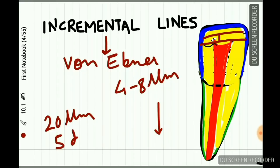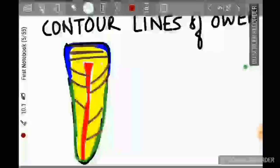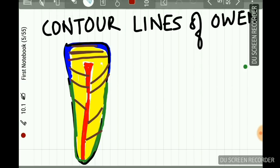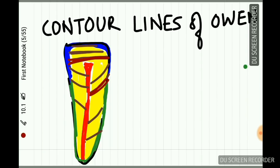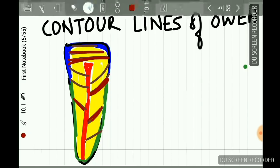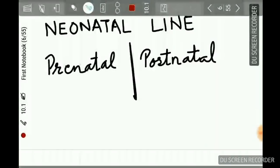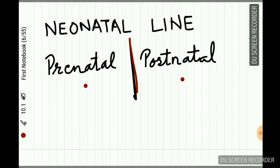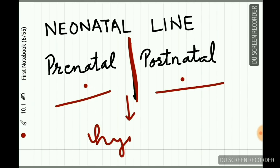These 20-micrometer-spaced lines represent a five-day interval in dentine formation. The accentuated or highlighted incremental lines are called contour lines of Owen — these are areas of hypocalcification. Like enamel, part of dentine is formed before birth and part after birth, so a neonatal line is also present in dentine, differentiating prenatal from postnatal dentine. This neonatal line is also an area of hypocalcification.